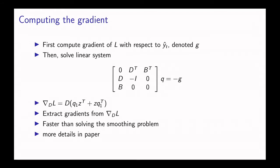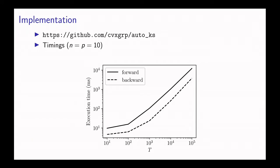After we found this vector q, we can construct the gradient of the prediction error with respect to the matrix D using this equation. Then once we've computed the gradient with respect to D, because D contains all of the parameters, we can extract the gradients with respect to all the parameters from that gradient.